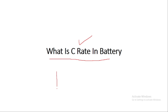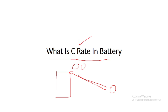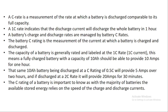C-rate is nothing but how much time your battery pack will take to discharge completely from 100% to 0%, or vice versa — how much time your battery pack will take to charge from 0% to 100%. A C-rate is a measurement of the rate at which the battery is discharged comparable to its full capacity. If your battery pack C-rate is 1C, that means your battery pack will take one hour to discharge or charge completely.